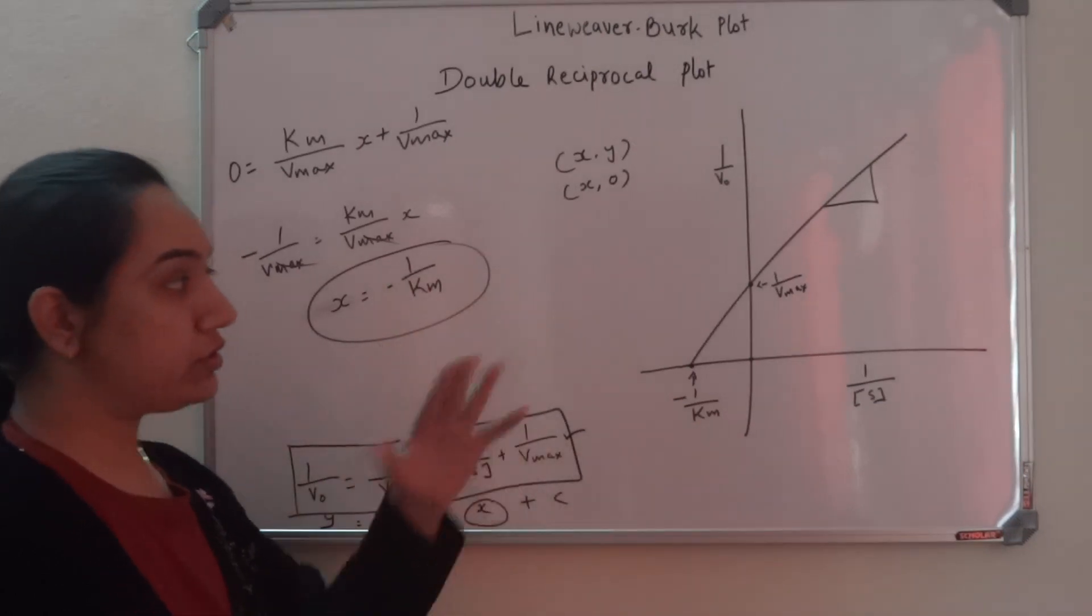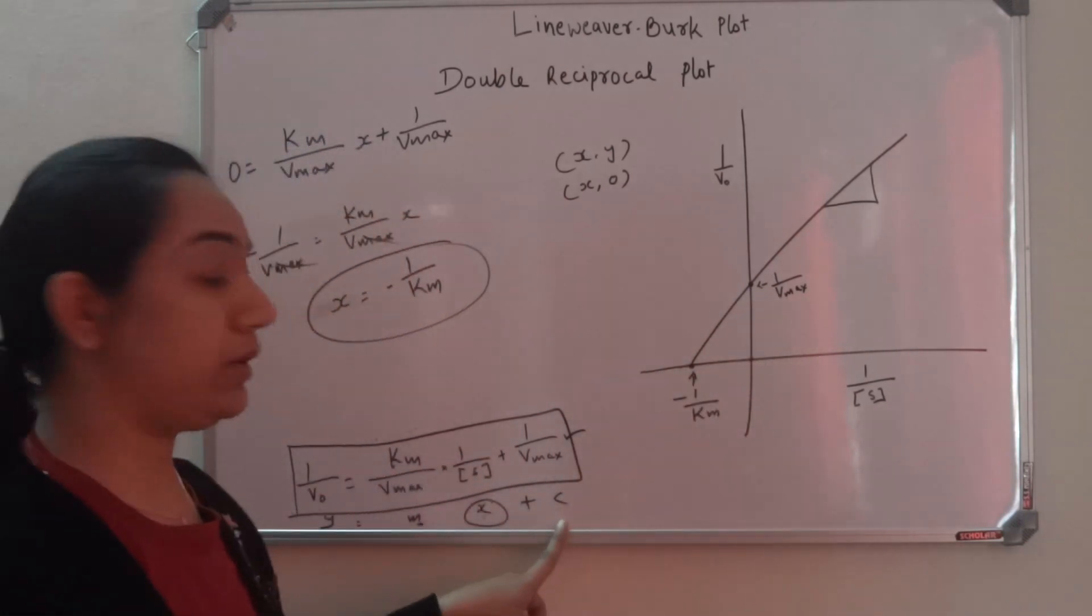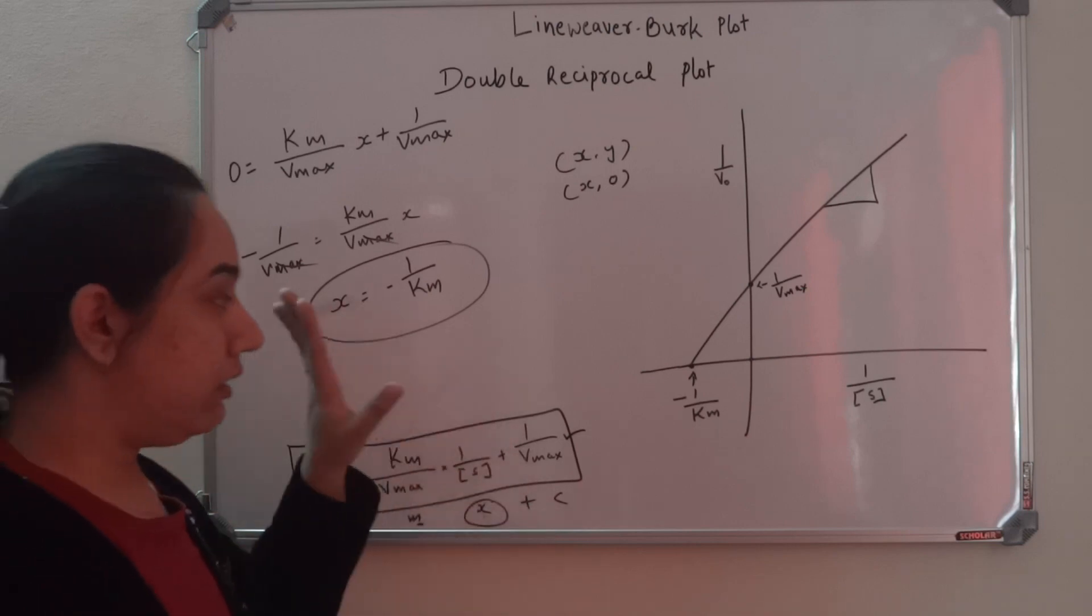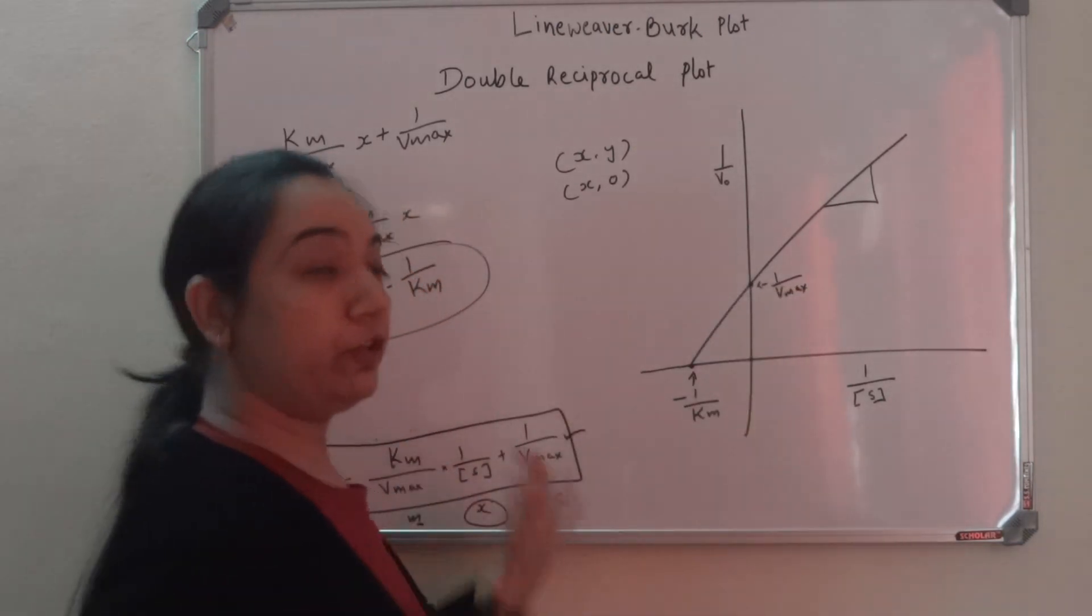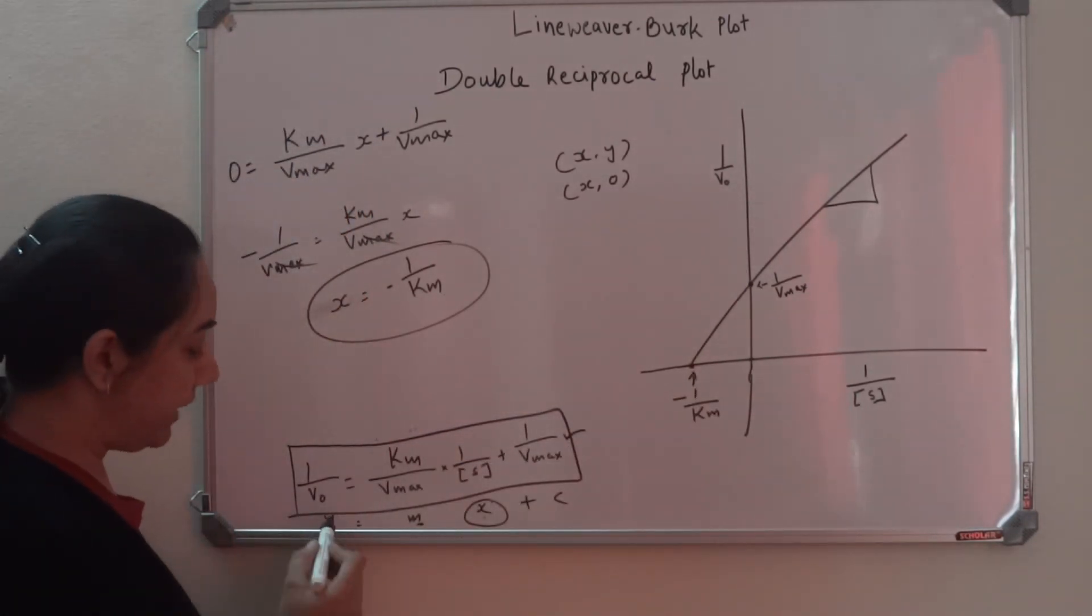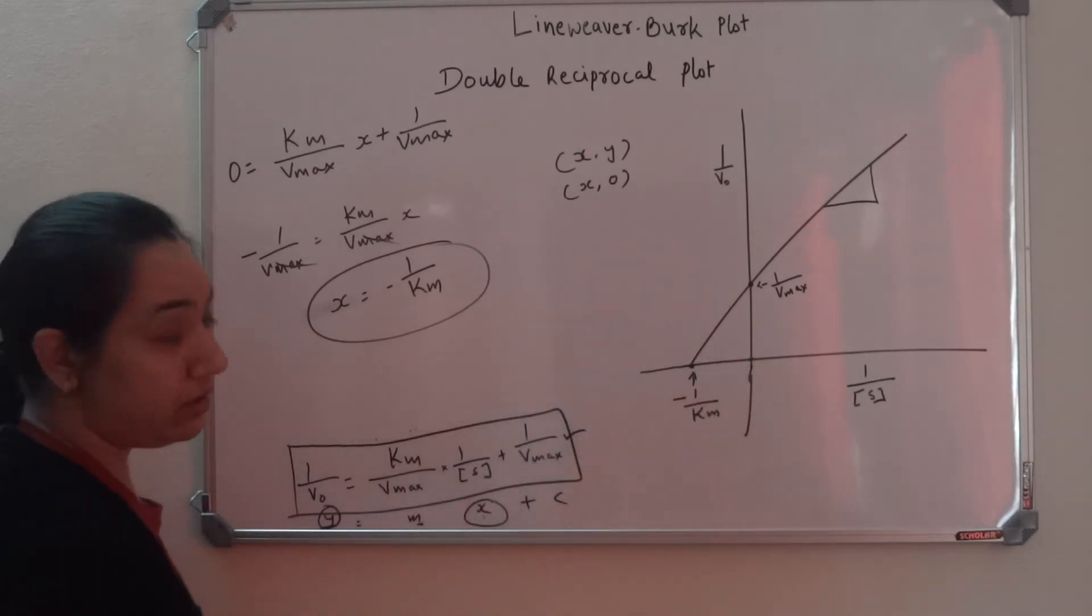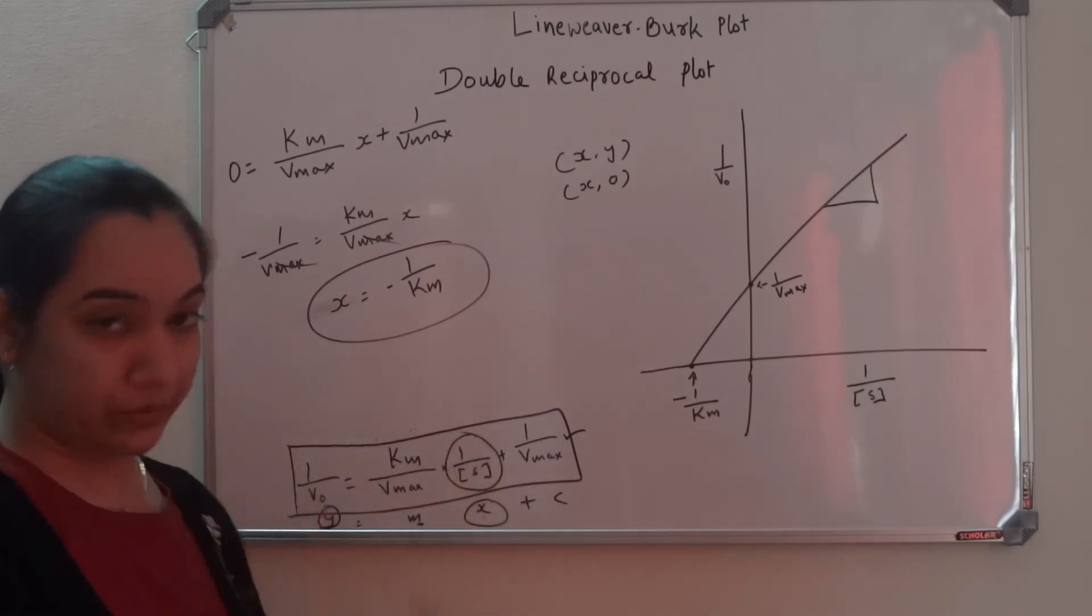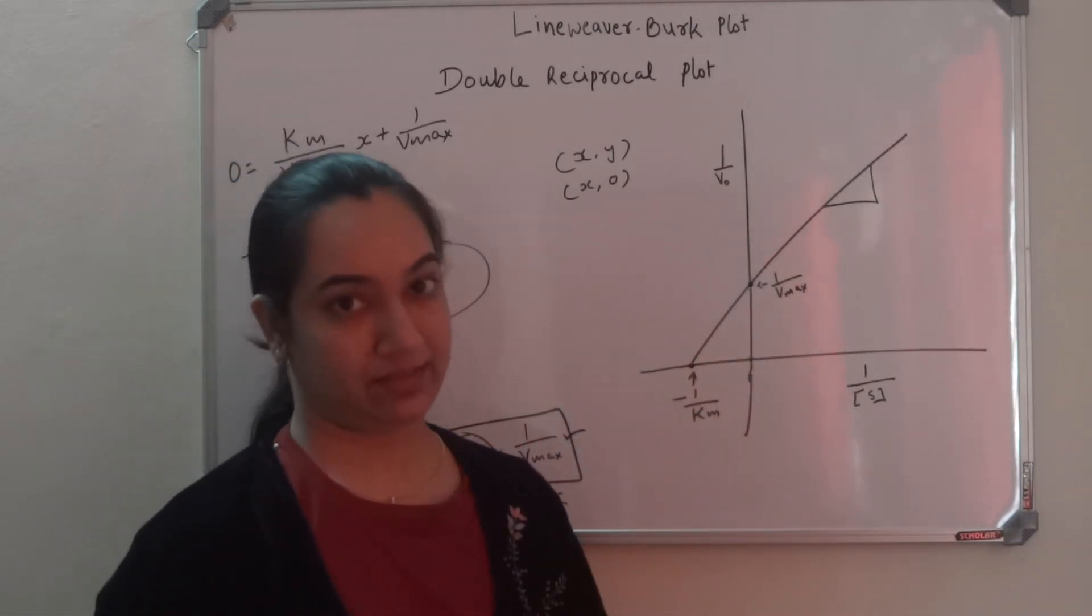Similarly, I can also find the value of this particular y point. I know this y-intercept from the equation - it's 1 by Vmax. To cross-verify, I can do the same thing. For the y-intercept, the value of x is 0. In this equation, I want to find y, and I know x for that coordinate is 0. So I'll put 0 here. If you do that and simplify, you'll get the value as 1 by Vmax.